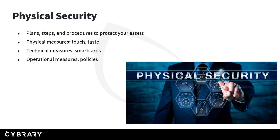Physical security is basically the plans, steps, and procedures to protect your assets. A lot of people think it's just putting up a fence or a security camera, but it includes procedures as well — like do we stop people at the door and question them, do we allow piggybacking or tailgating? It has three components: physical measures — things we can touch; technical measures for physical security like smart cards; and operational measures — our policies and procedures.